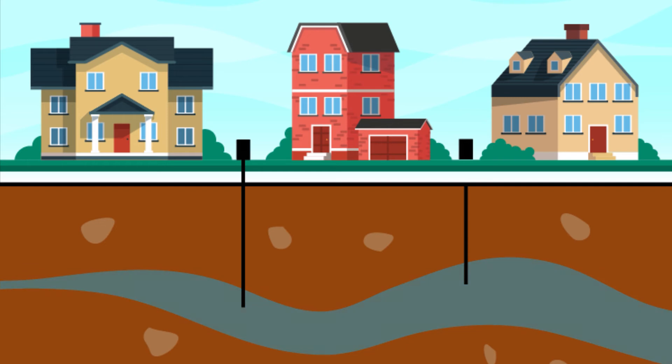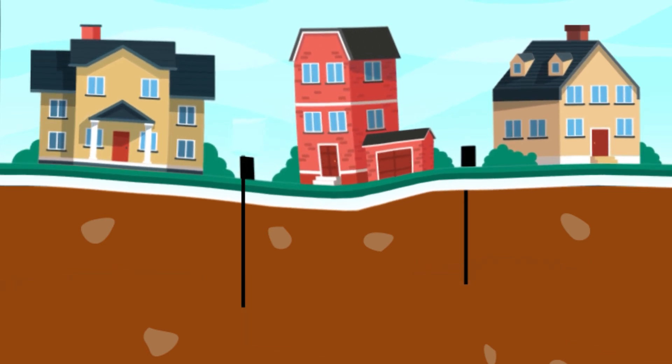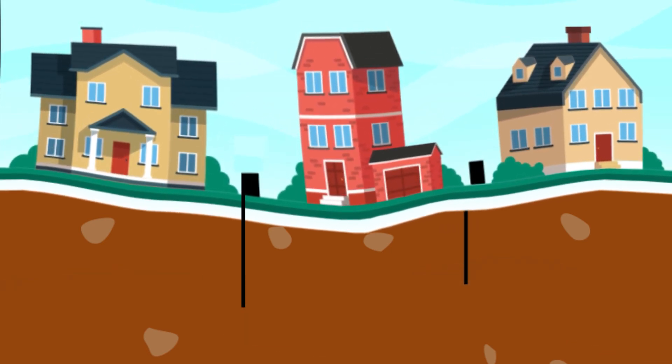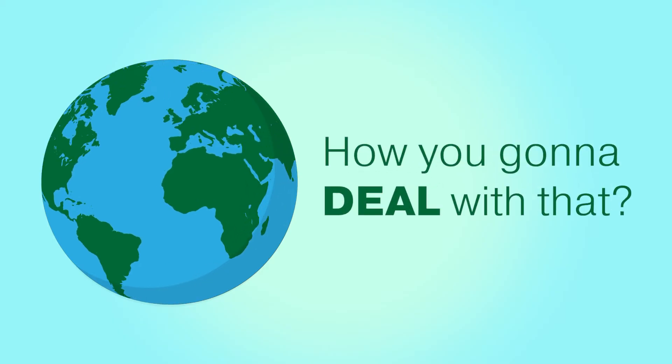And when the groundwater disappears, there is nothing between these pores where water used to flow. Naturally, all the dirt have to fill up these pores which make the surface going down. How you gonna deal with that?